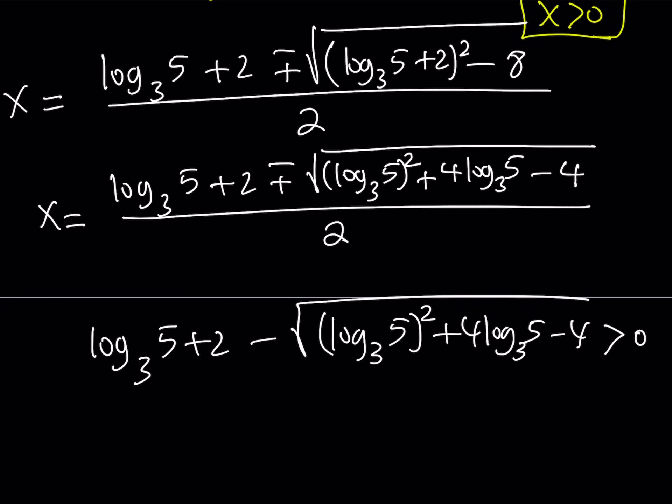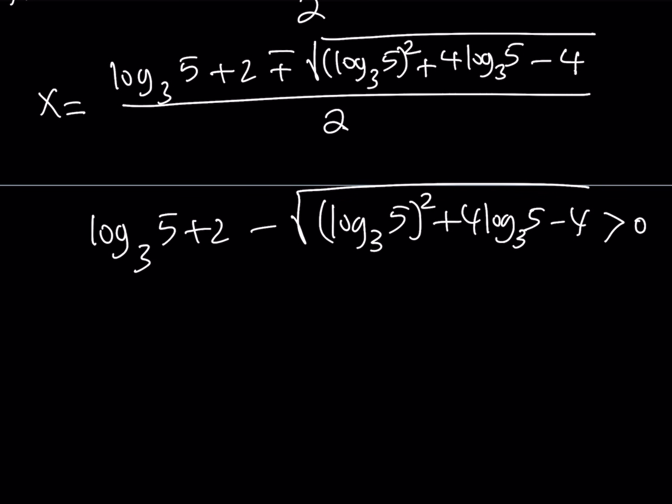But what about the minus sign? So we need to make sure that this expression right here is greater than 0, right? Because that's the x value. The bottom doesn't matter. If the numerator is positive, the whole thing is positive. Now, how can we verify this? Well, we can basically do the following. We can just assume that this is true or just check. Put a question mark here. Is this true?